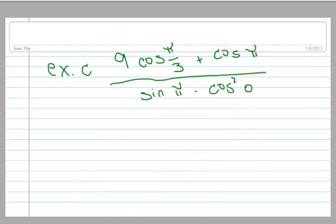All right, next example. I've got 9 times the cosine of pi over 3 plus the cosine of pi, all divided by the sine of pi times the cosine of 0 squared.